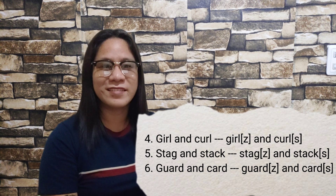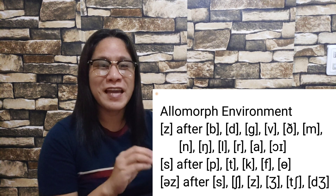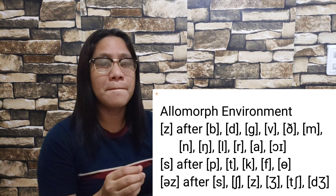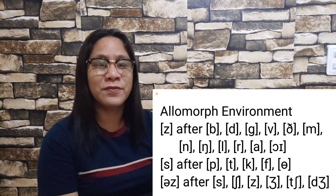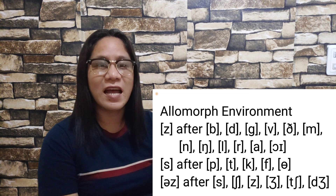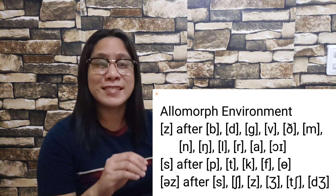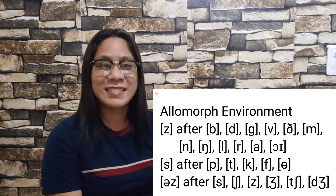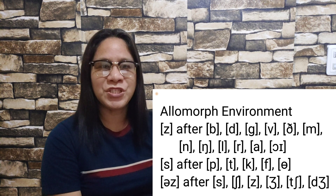Guard/Guards, Card/Cards. Since we are looking only at the final sound of each noun, we can make the following summary by studying the allomorph environment. The /s/ sounds as /z/ after sounds like b; it sounds as /s/ after /s/ sounds; and plural nouns ending in -es sound as /ɪz/, as in the following words.